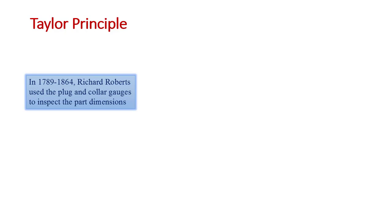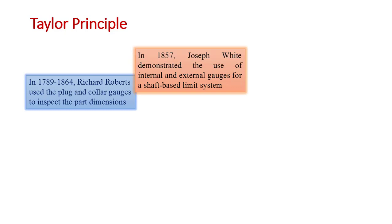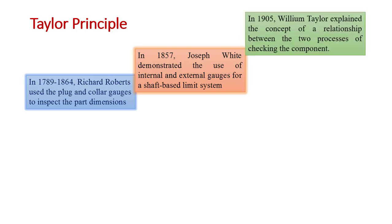Taylor principle. In 1789 to 1864, Richard Roberts used the plug and collar gauges to inspect the part dimensions. In 1857, Joseph White demonstrated the use of internal and external gauges for shaft-based limit system. In 1905, William Taylor explained the concept of a relationship between the two processes of checking components. This is the evolution of gauges.